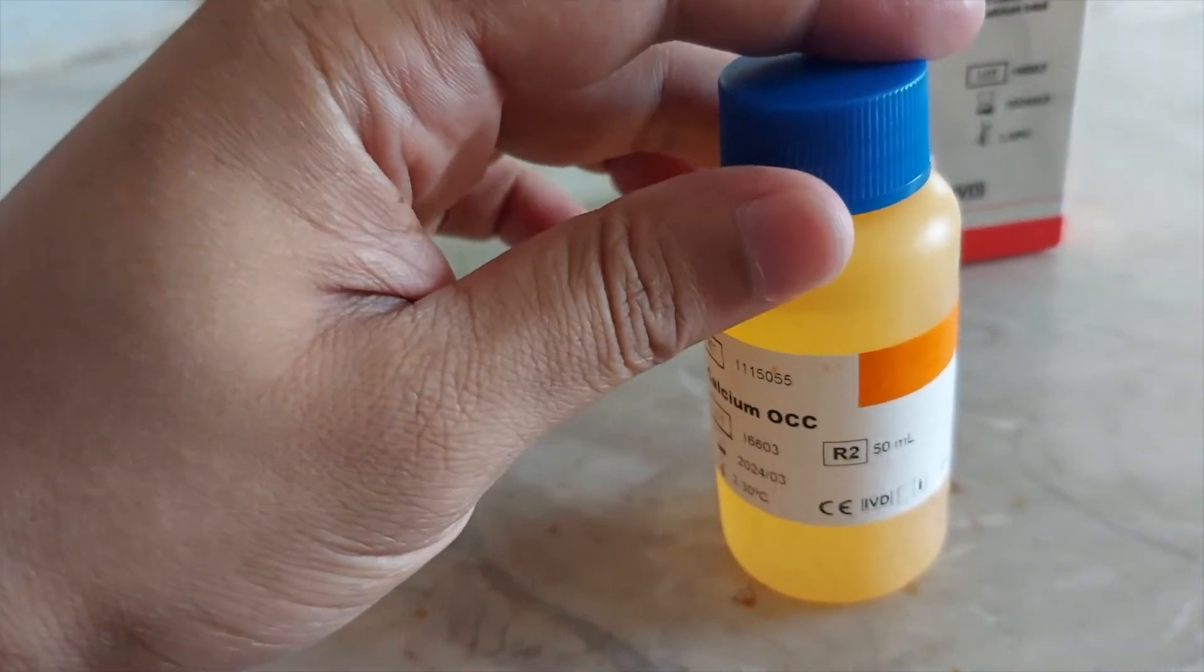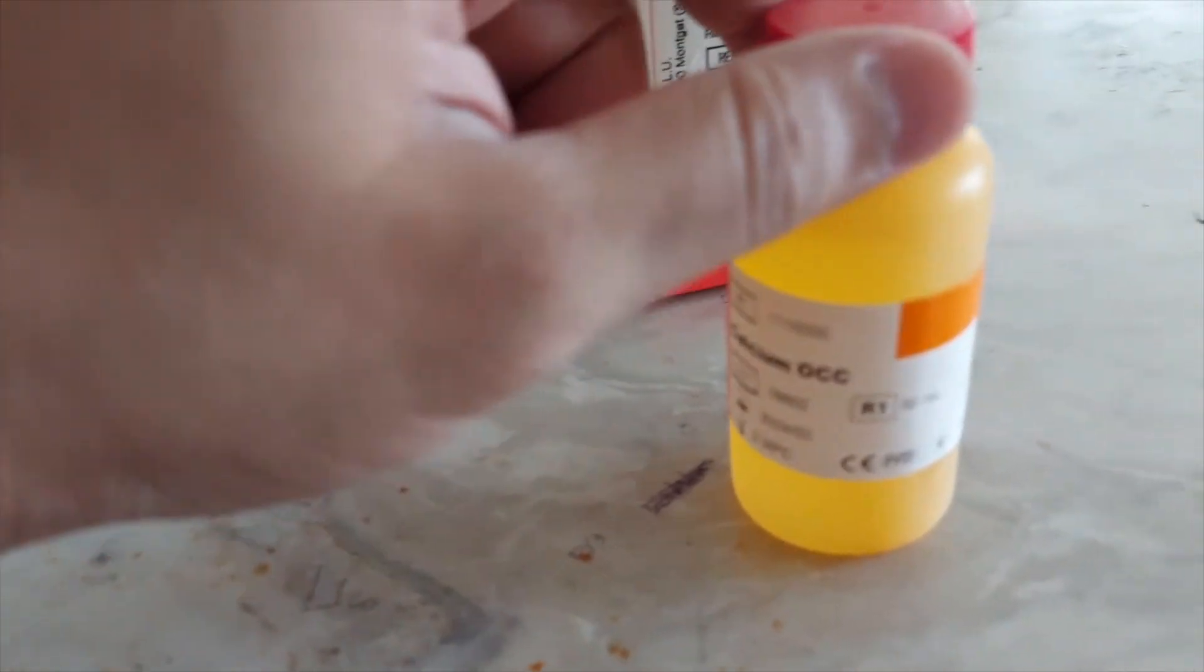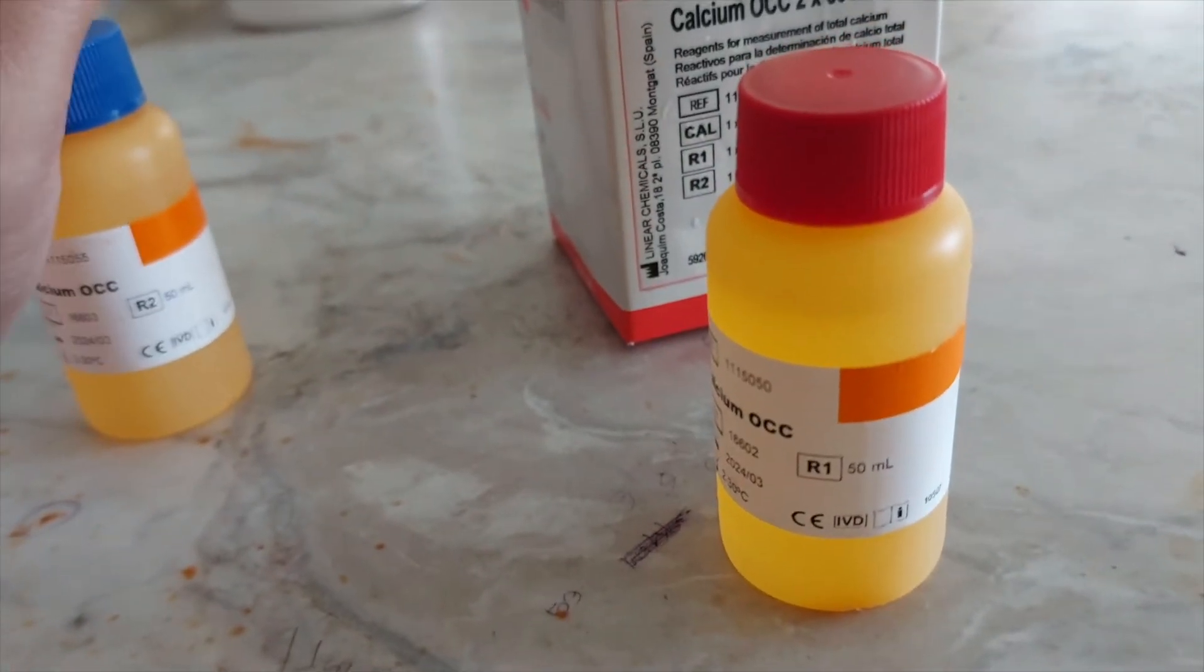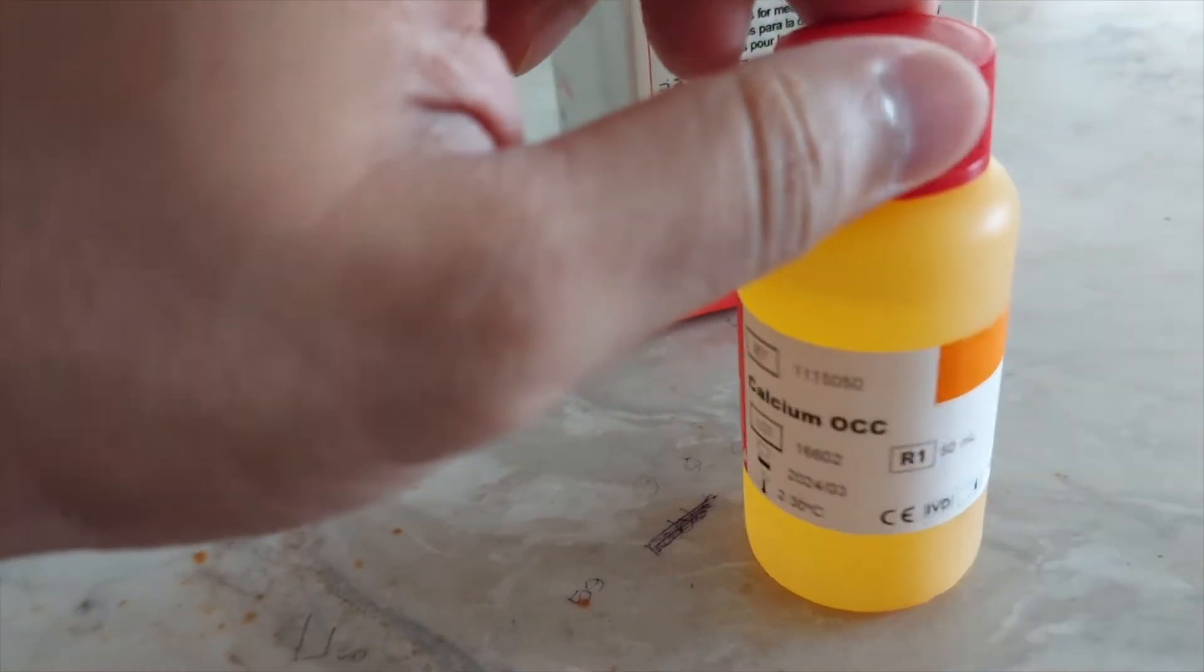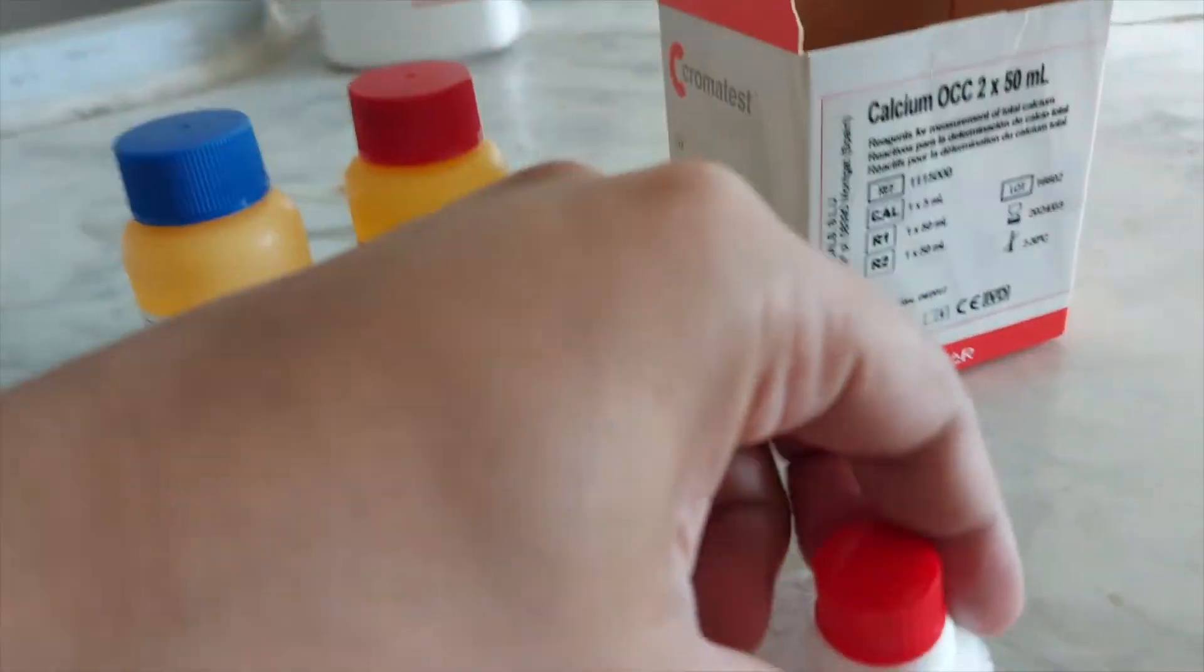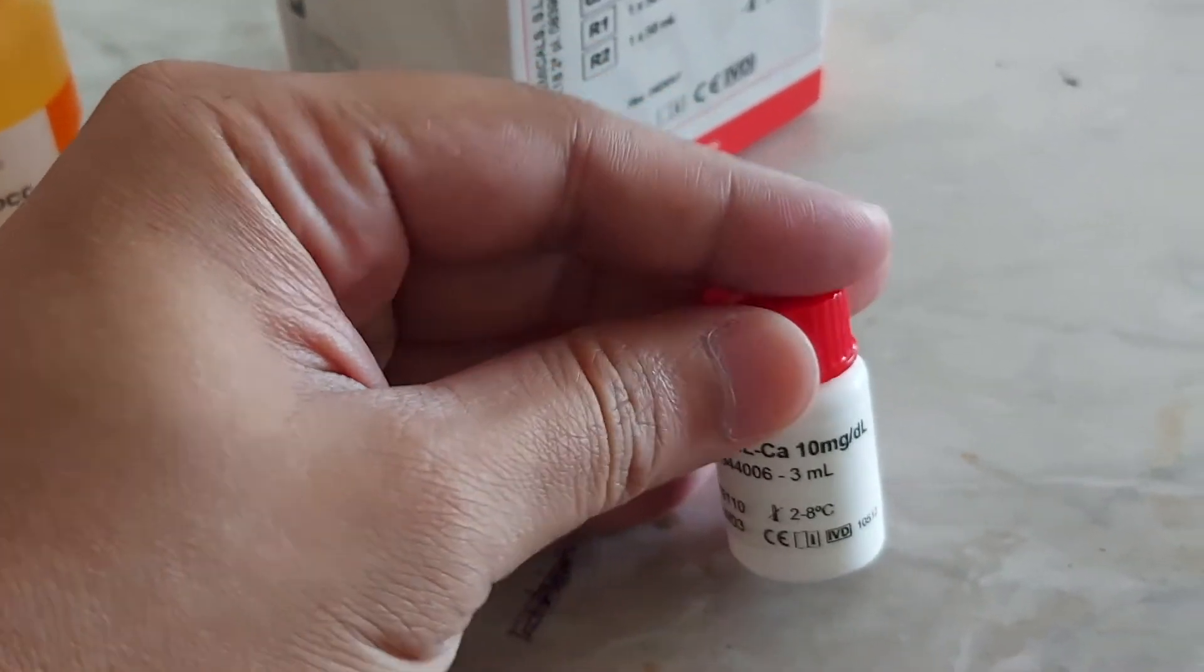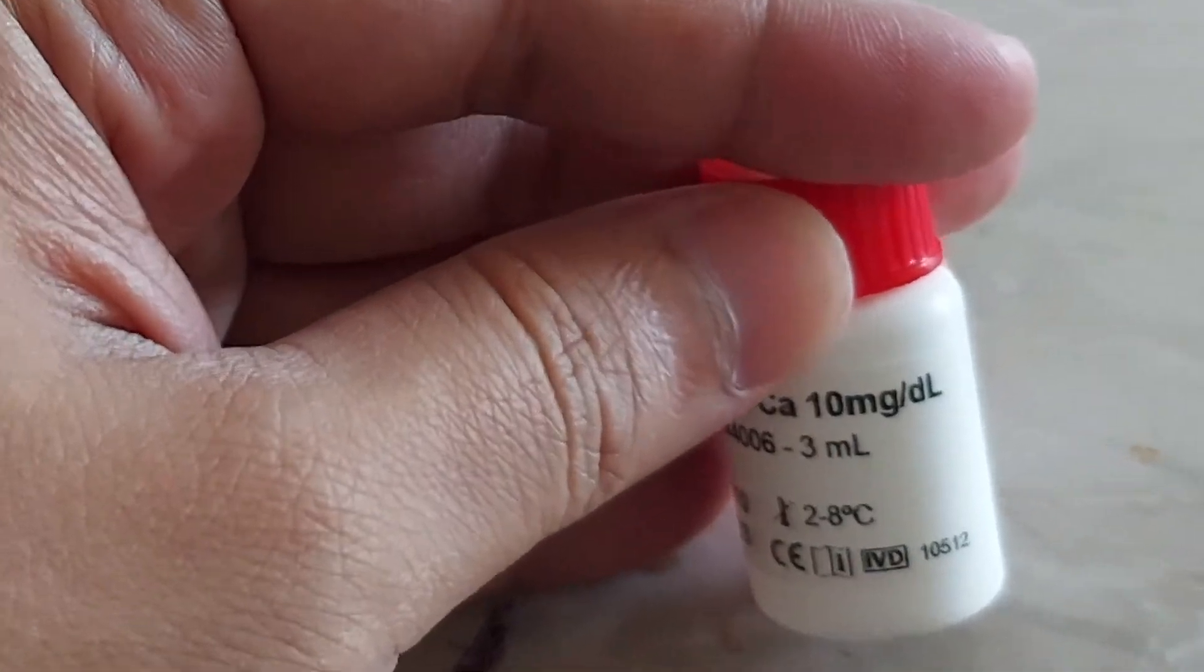Here is our reagent number two, named as R2, which is actually a buffer. And here is our reagent number one, which is crisophthalene complex zone. And the third chemical we have is the calcium standard. You can see the concentration of the calcium standard is 10 milligrams per deciliter.